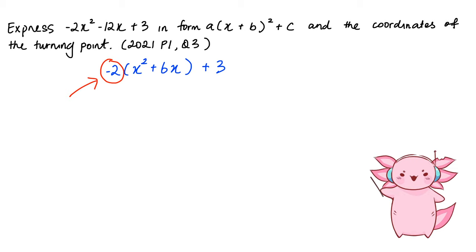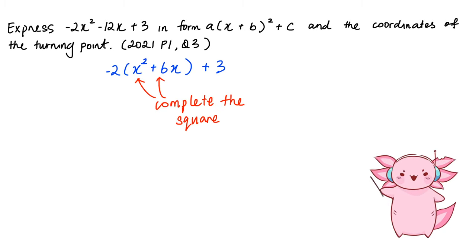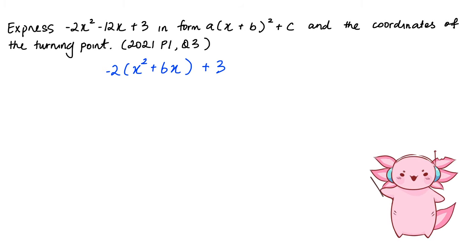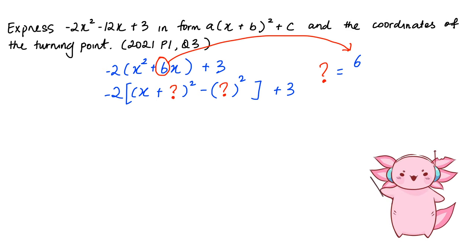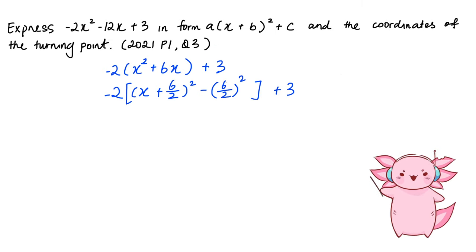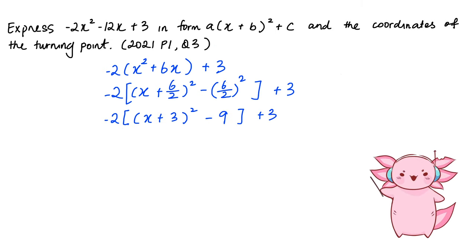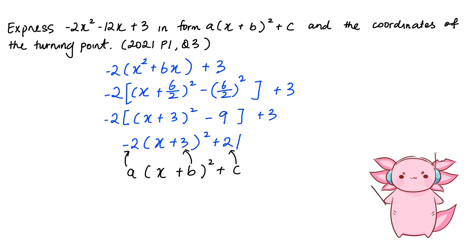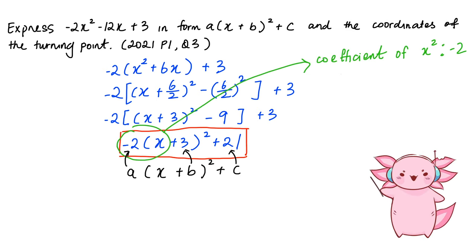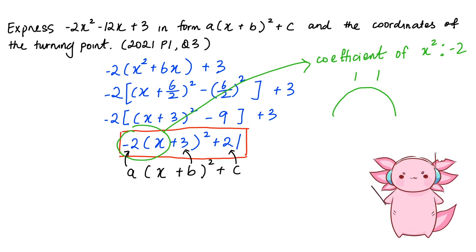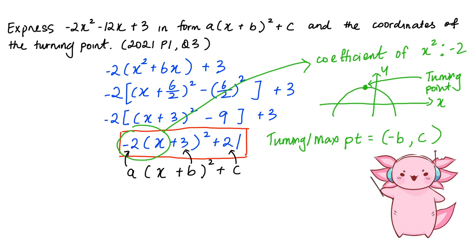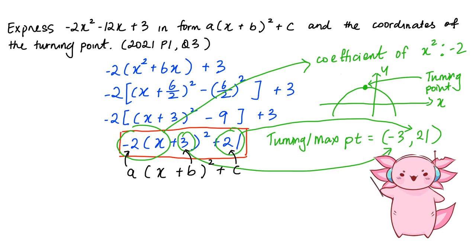So let's take out the negative 2. Now we complete the square of the x-squared and x term, making it into the form of (x + something)² − something². This something is just the coefficient of x, which is 6, divided by 2. After expansion, we get the answer of −2(x+3)² + 21. The coefficient of x-squared is negative 2, so we know it's a sad face. For the turning point or maximum point, it's just (−b, c), so the turning point is (−3, 21).